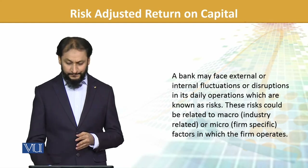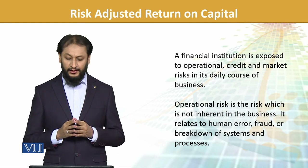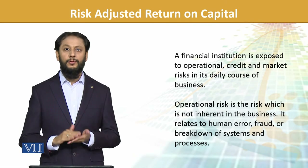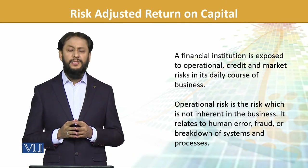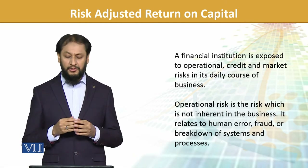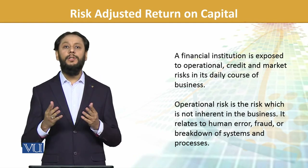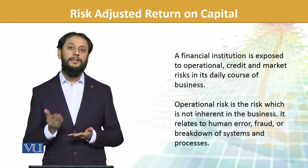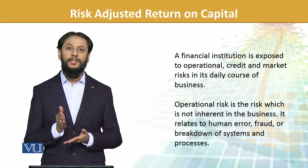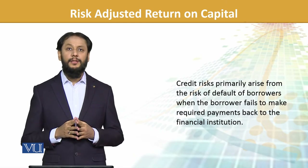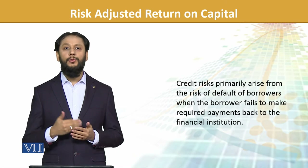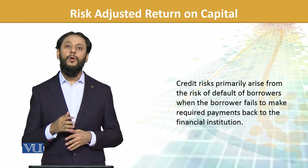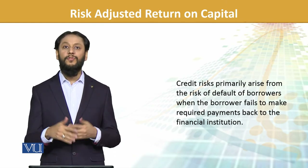A financial institution is exposed to operational, credit, and market risk in its daily business cycle. Operational risk is not inherent in the business; it relates to human error, fraud, and breakdown of systems. For example, if a bank's system goes down for a day and millions of transactions are pending, the losses could be significant — that is operational risk. Credit risk arises from the risk of default by borrowers. You have lent money and need to recover it with interest, but if that party defaults, that is credit risk.